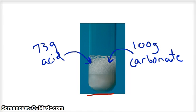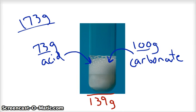But the total of my reactants before I started had been 173 grams, right? 100 plus 73. So what happened to those extra 24 grams? As you may be guessing at this point, what happened to those extra grams is they bubbled away as carbon dioxide.